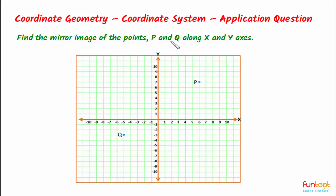Let's do a problem. Here we have to find the mirror image of points P and Q along the X axis and along the Y axis. Let's discuss the approach. Before starting, we should know what mirror image means — how these points will look when viewed through a mirror. The question asks: when the mirror is placed along the X axis and along the Y axis, what will be the coordinates of the mirror images of points P and Q?